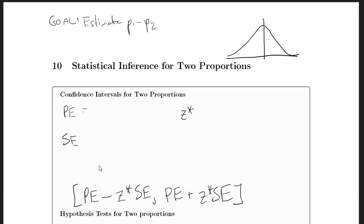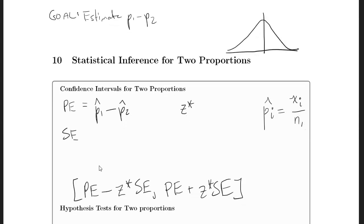The point estimate is the difference between the two sample proportions. We may have to calculate those manually, in which case the i-th sample proportion is the number of successes divided by the total sample size. Z-star, as usual, is the inverse norm of 1 minus half the error.